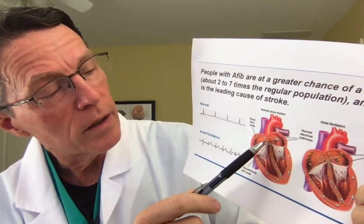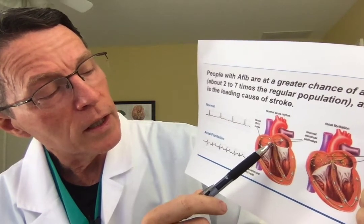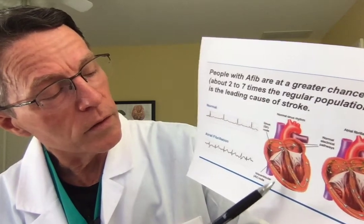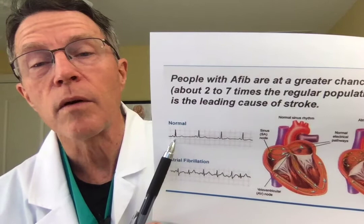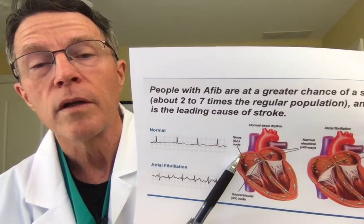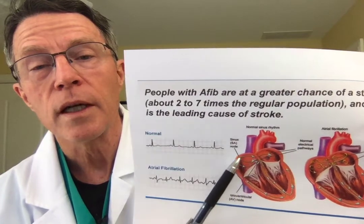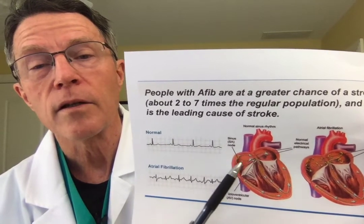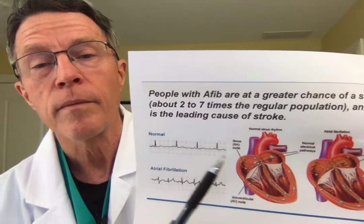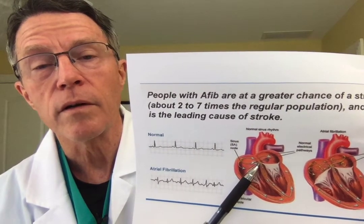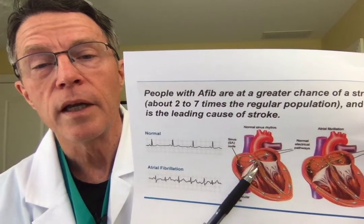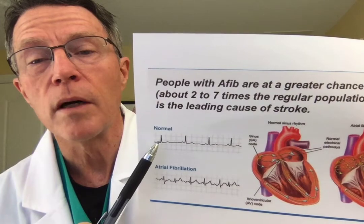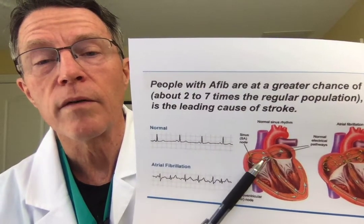The sinoatrial node goes through the atria, then it goes through one area here called the AV node, and then coordinates down through the ventricles. If you look at an EKG, that's exactly what we see. The P wave is the conduction as it starts at the sinoatrial node and goes through the atria. That P wave right there — that small bump — is the wave going through the atria.